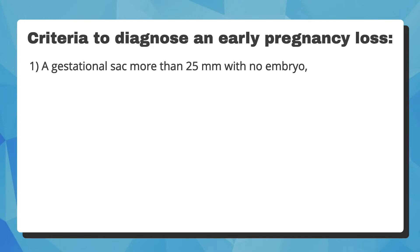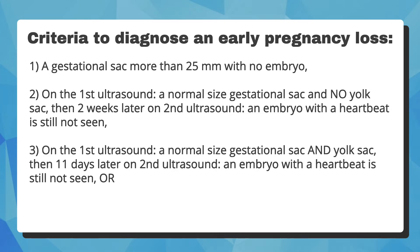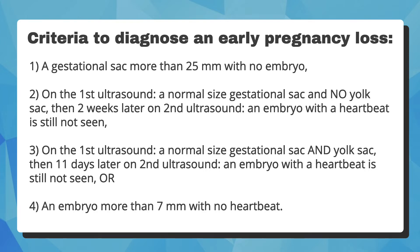The criteria include: if the gestational sac is more than 25 mm and no embryo is seen; if on the first ultrasound there is a normal-sized gestational sac and no yolk sac, then two weeks later on an ultrasound an embryo with a heartbeat is still not seen; if on the first ultrasound there is a normal-sized gestational sac and yolk sac, then 11 days later on another ultrasound an embryo with a heartbeat is still not seen; or there is an embryo that is more than 7 mm with no heartbeat.